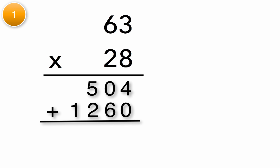Go ahead and add your two numbers together. 4 plus 0 is 4. 0 plus 6 is 6. 5 plus 2 is 7. 1 plus nothing is 1. 1,764.